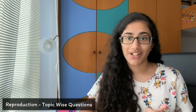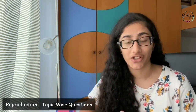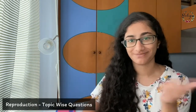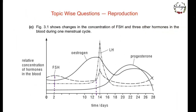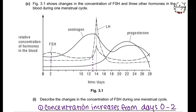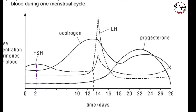Let's get right on to these questions because there are some really good questions I have found for you guys to solve with me. I have compiled a few of the questions — let's go through them. Firstly, figure 3.1 shows the changes in concentration of FSH and three other hormones in the blood during one menstrual cycle. Describe the changes in the concentration of FSH during one menstrual cycle. They are talking about FSH, so you need to look at the graph showing FSH.